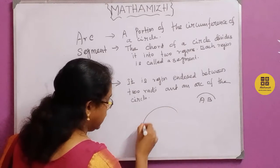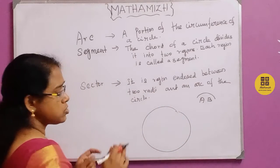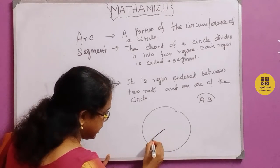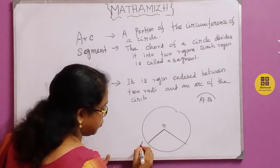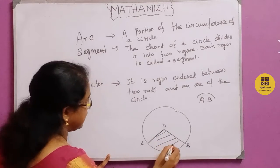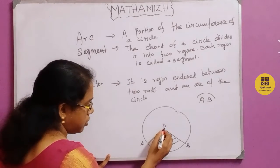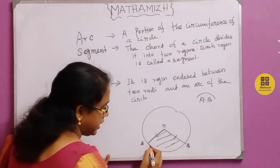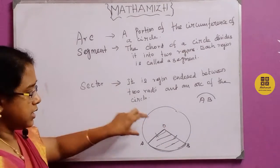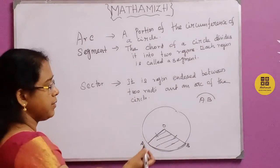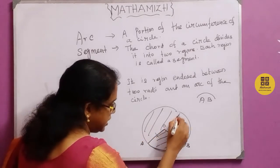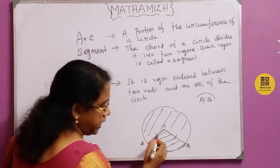The sector is the region enclosed between two radii of the circle and the arc. This is the center O, with points A and B. The region formed is the sector of the circle. The smaller area is the minor sector and the larger area is the major sector.